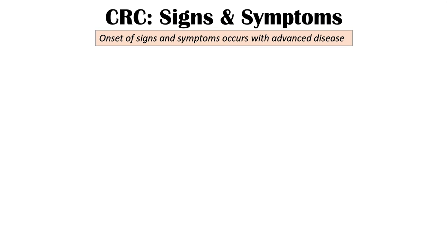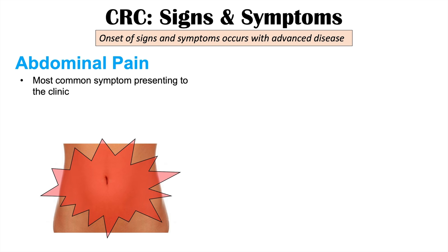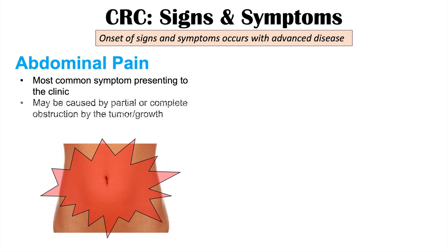Colon cancer may be asymptomatic, and often the onset of signs and symptoms occurs with advanced disease. One of those symptoms is abdominal pain, which is the most common symptom presenting to the clinic. That abdominal pain may be caused by a partial or complete obstruction by the tumor or growth, or by invasion of the tumor into the peritoneum.